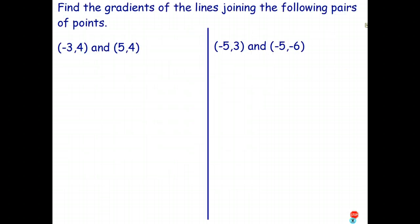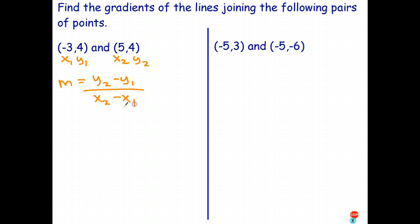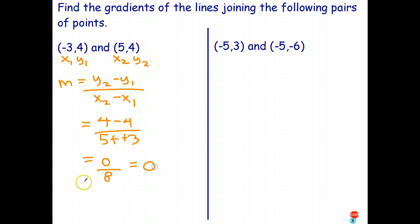Let's see what happens if we try to use our gradient formula on this. I'm going to call one point x2, y2 and the other x1, y1. Write the gradient formula: M equals y2 minus y1 all over x2 minus x1. y2 take y1 is 4 subtract 4; x2 take x1 is 5 subtract negative 3. So 4 minus 4 is 0, and 5 subtract negative 3 becomes 5 plus 3, which is 8. And 0 divided by 8 is 0. Therefore the gradient of the line passing through those two points is 0. Notice the y-coordinates are the same, and therefore the line is horizontal.